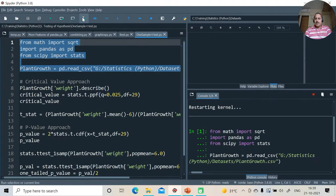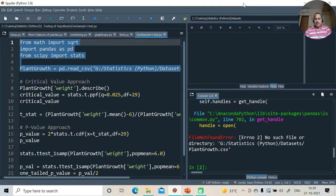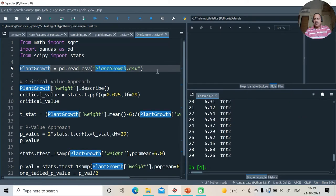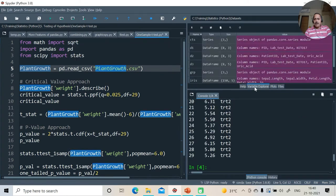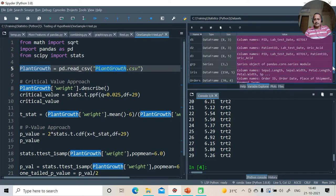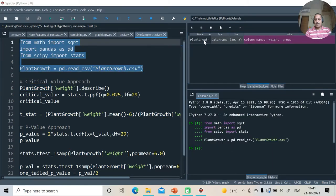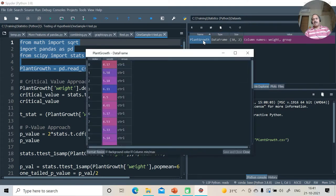So here I am importing the data set. Let's look at this data set. Following is the data set with different values of weights. We are going to keep aside this group variable for now.